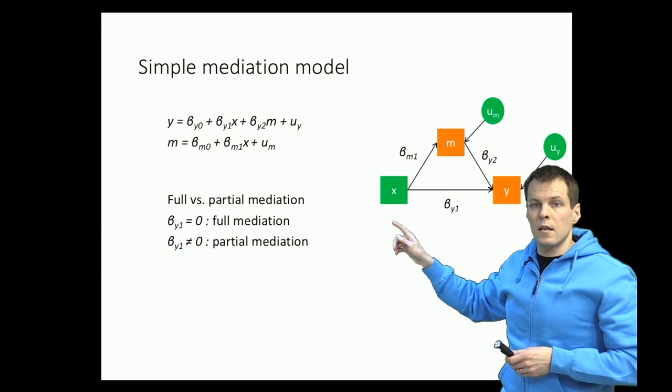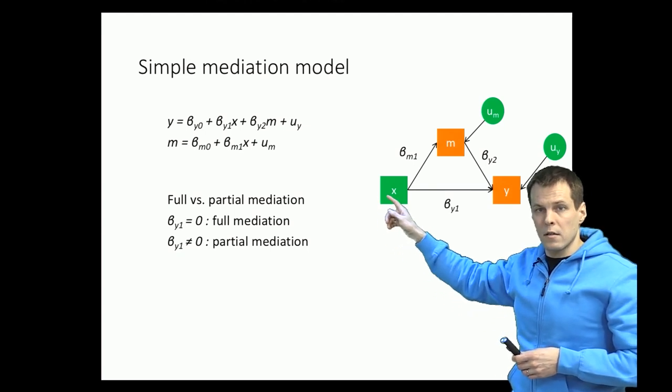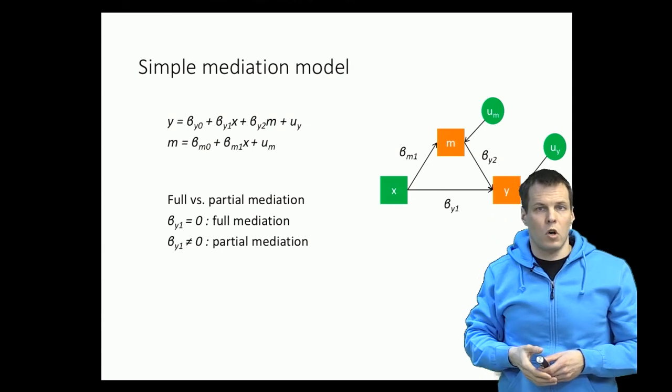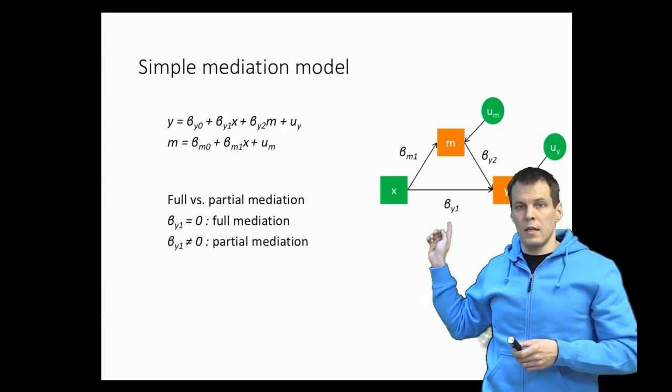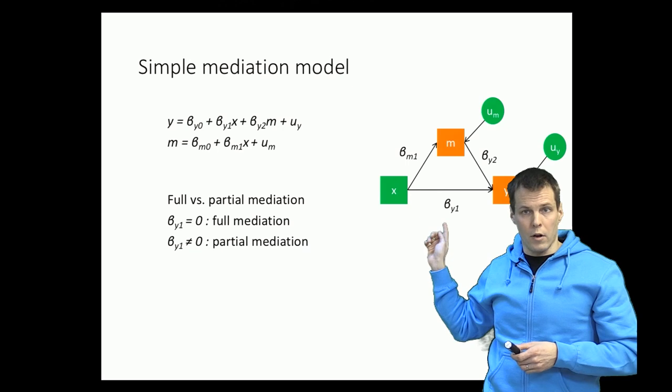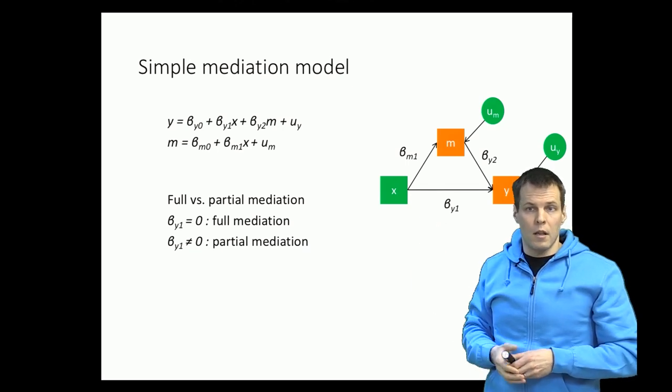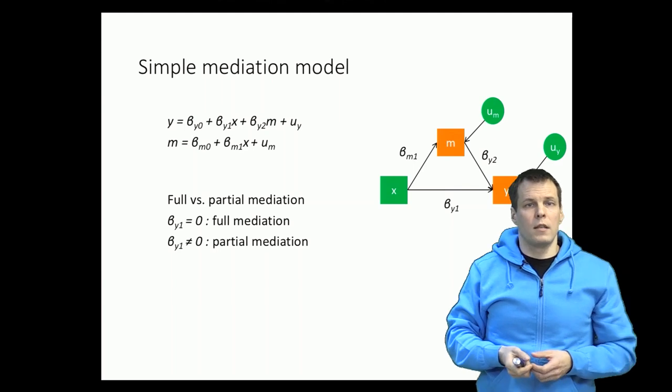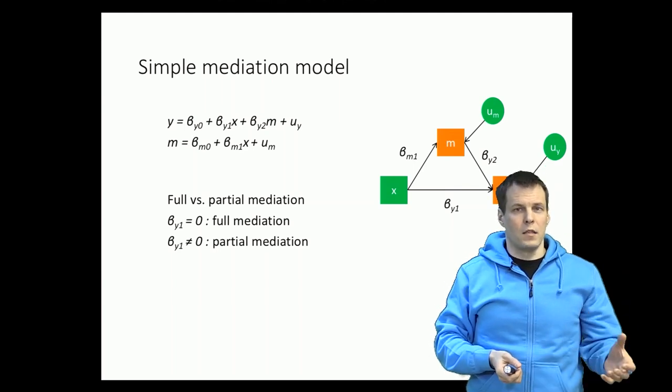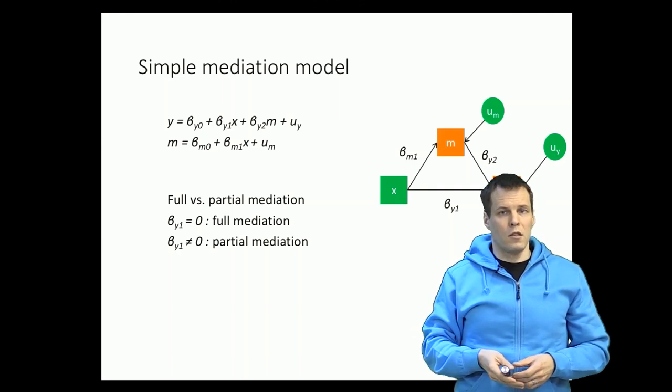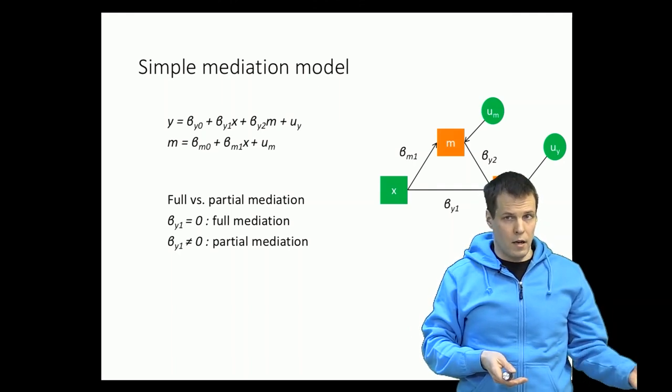If this direct regression coefficient from x to y is zero, then we say that it is a full mediation model. If this regression coefficient of y on x is non-zero, then we say it's partial mediation. The idea of full mediation is that any influence of x must go through m, and partial mediation means that there can be some other mechanisms as well.